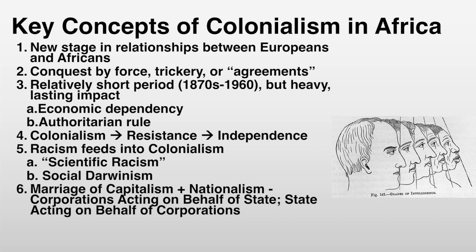Colonialism in Africa is a new stage of relationships between Europeans and Africans — not a continuation, but a new stage. The conquest of these nations was done by force, by trickery, or sometimes by so-called agreements. Kind of like we saw the Treaty of Nanjing, there was officially a treaty, but it was shoved down people's throats. It's going to be kind of the same thing in Africa.